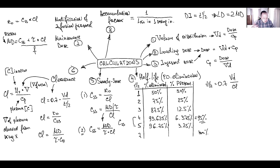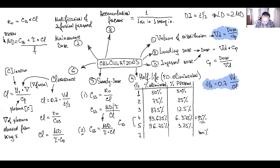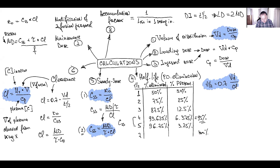In summary, this is the general blueprint of equations for pharmacokinetic calculations. The basic equations are: (1) Volume of Distribution, (2) Half-life, (3) Steady-state concentration for continuous infusion, (4) Steady-state concentration for discrete doses, and (5) Clearance. All other equations are derived from these foundational ones.